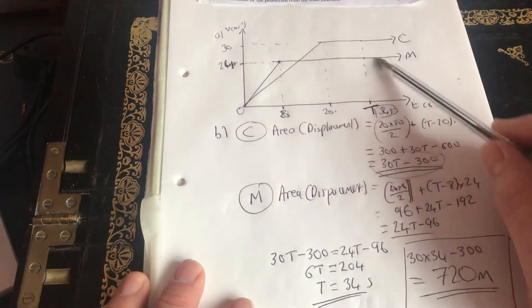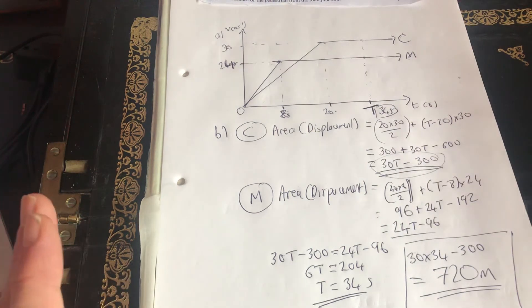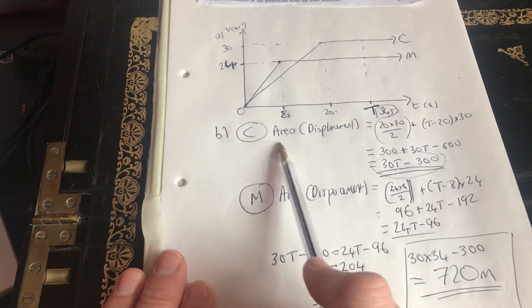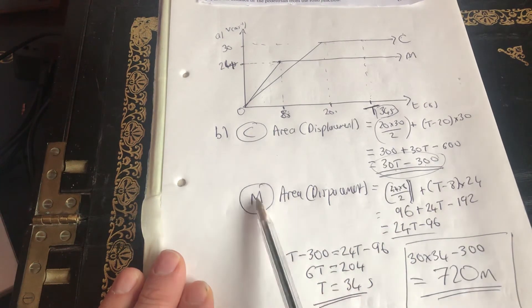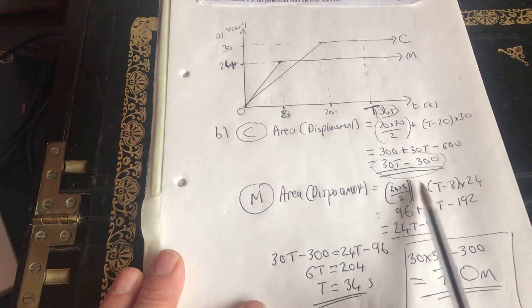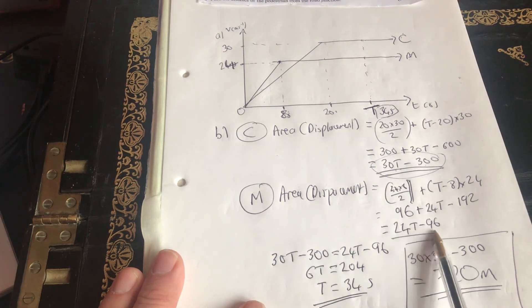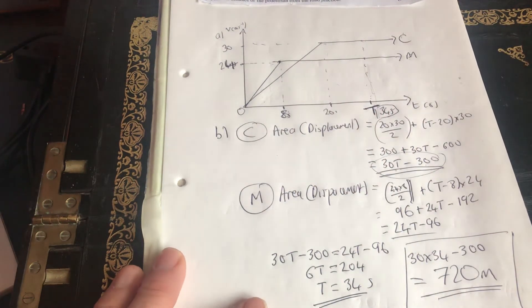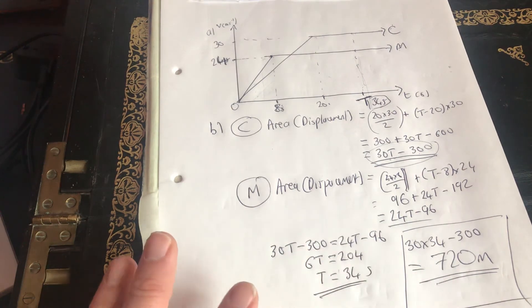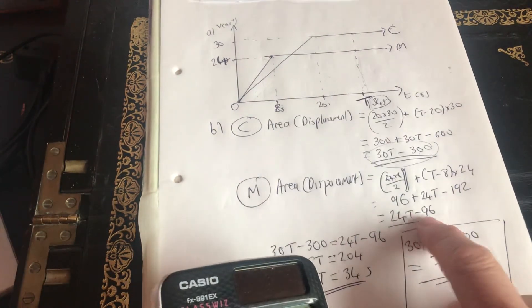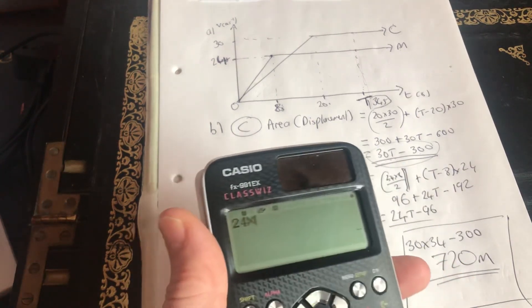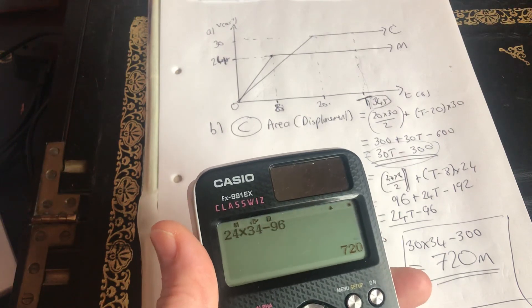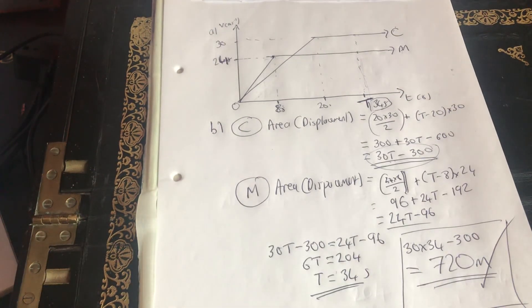So let's just review what we've done. We've drawn the graph. Once we've got a graph, we have a better chance of solving the problem. We've looked at how far the car has gone: 30T minus 300, and how far the motorcycle has gone: 24T minus 96. We're saying this area is the same as this area. Therefore, they've travelled the same distance. Work out the time and we put that into one of those. Just to check, 24 times 34 minus 96. Hopefully this will say 720 and it does. Fantastic. So I know I'm correct there. I hope that was clear. Thank you very much.